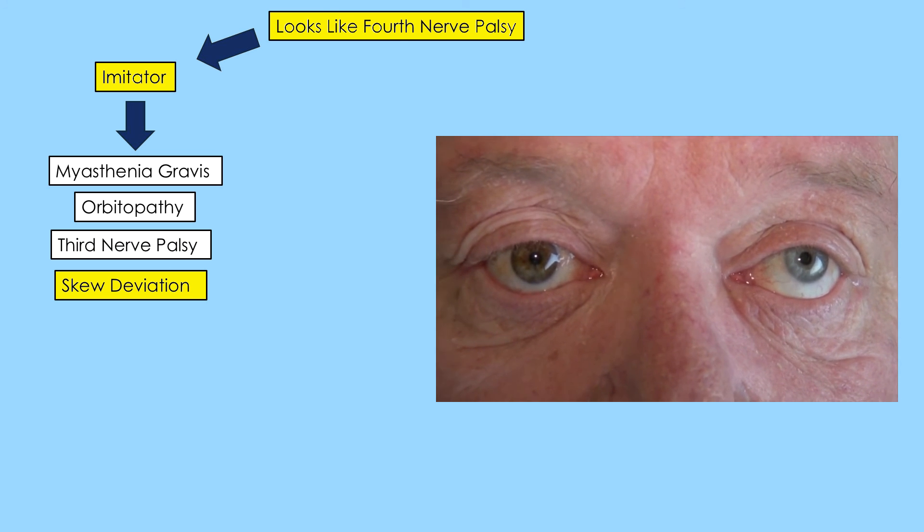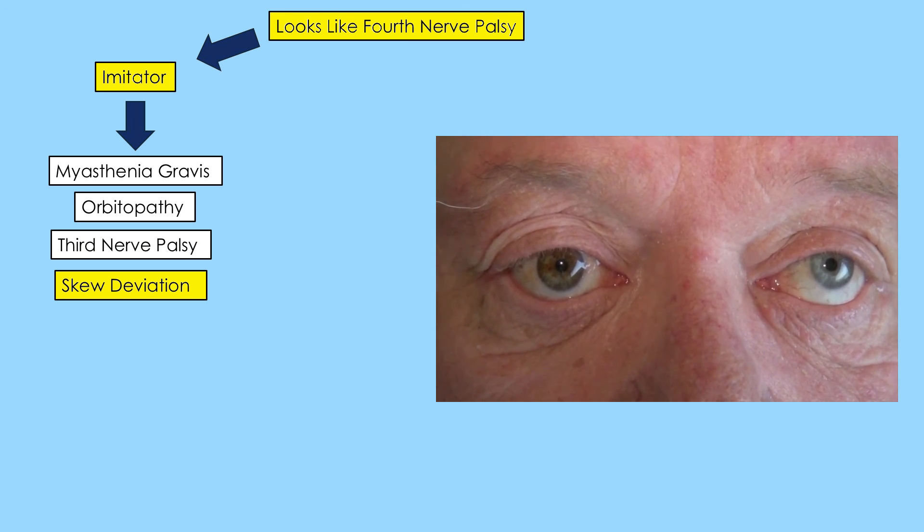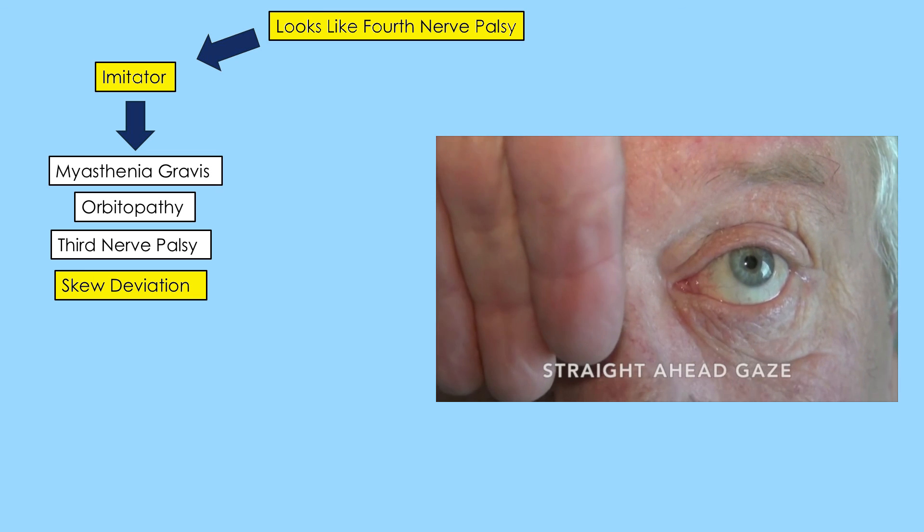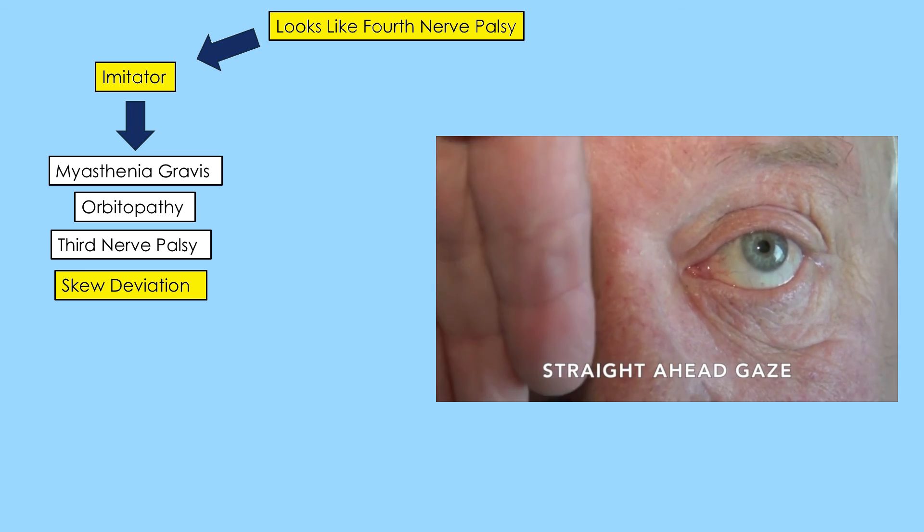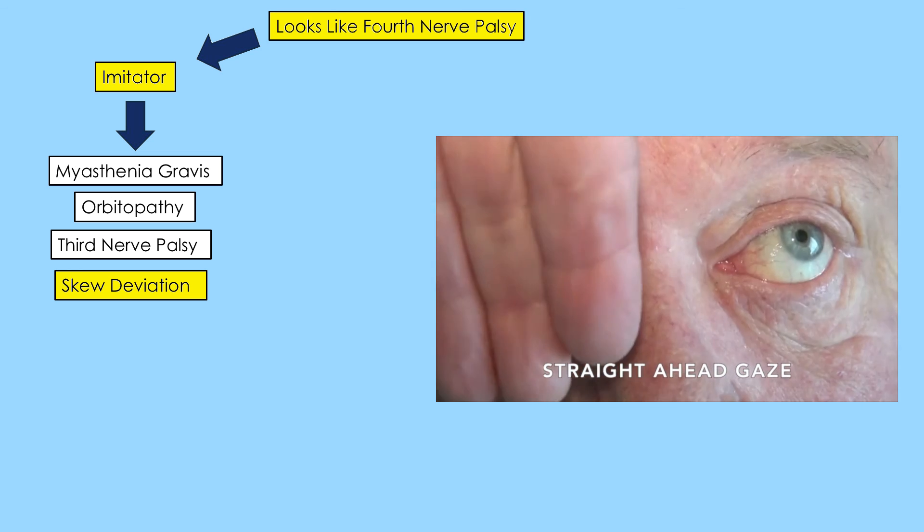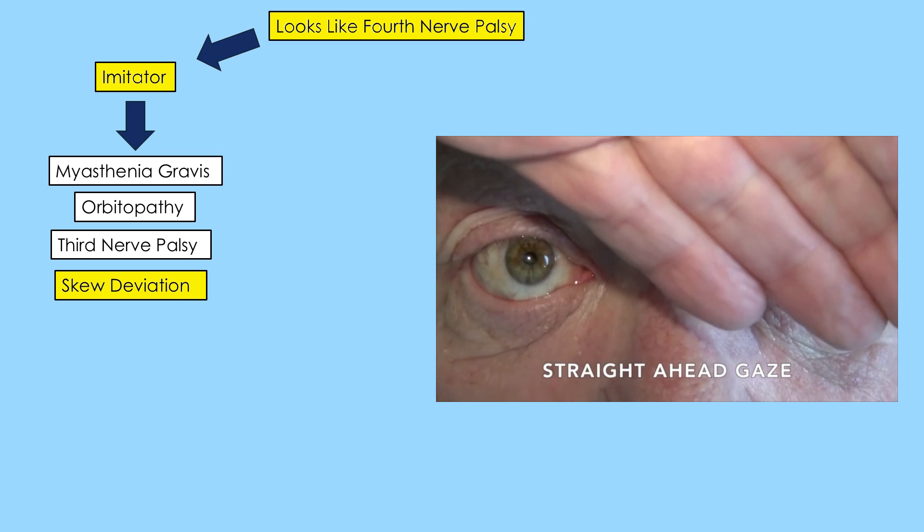Skew deviation, a component of the brainstem ocular tilt reaction, causes vertical misalignment, but does not fulfill the three-step test or show ex-cyclodeviation on double Maddox rod testing.